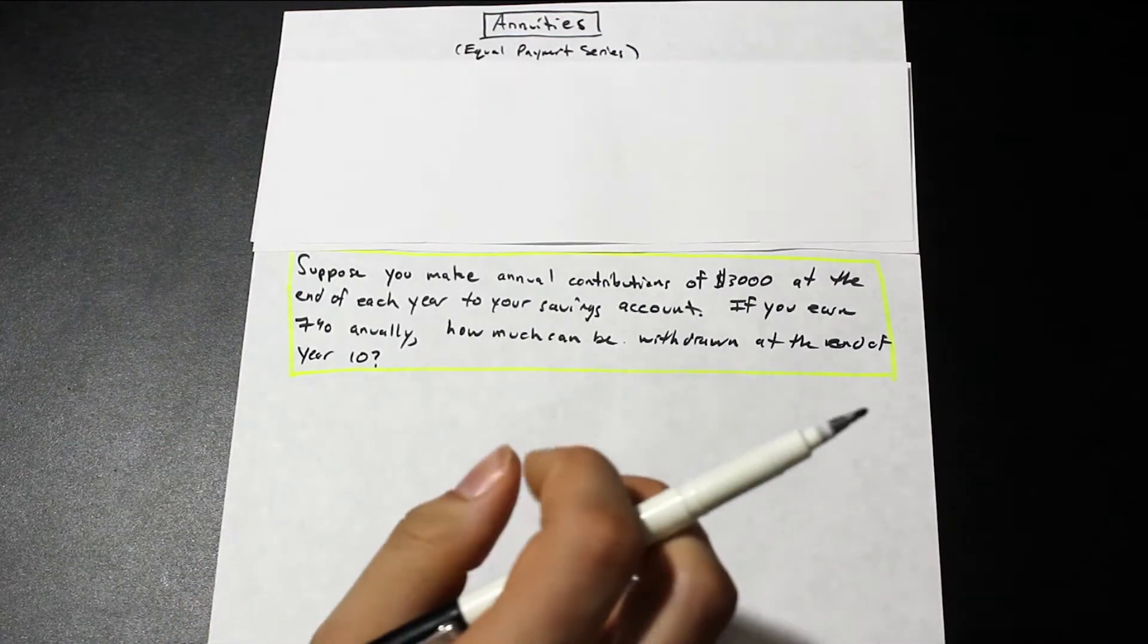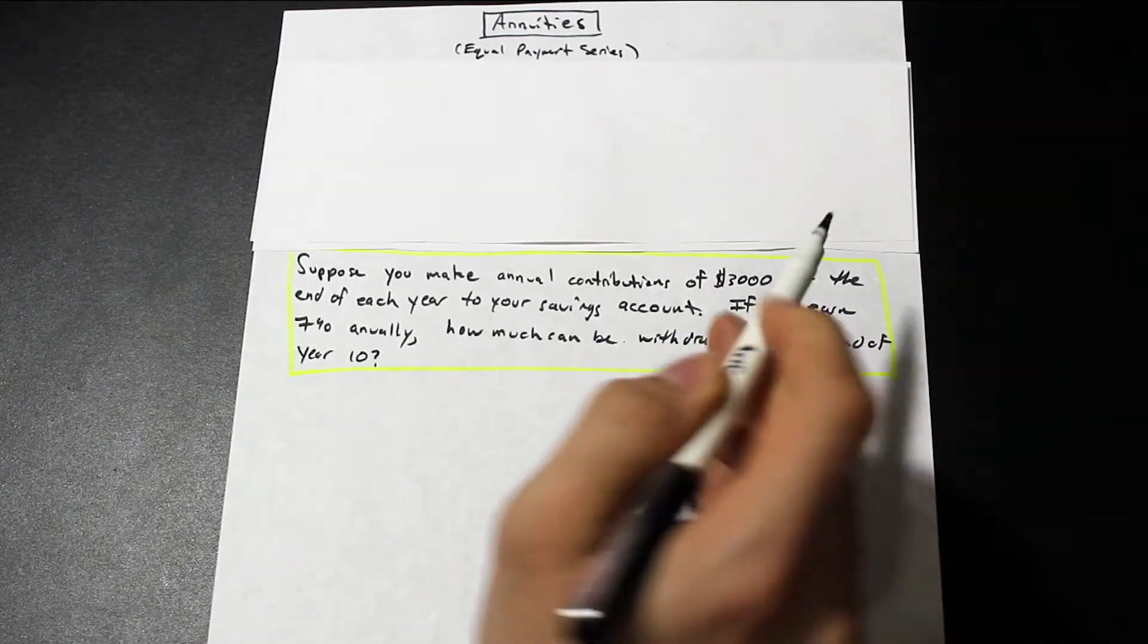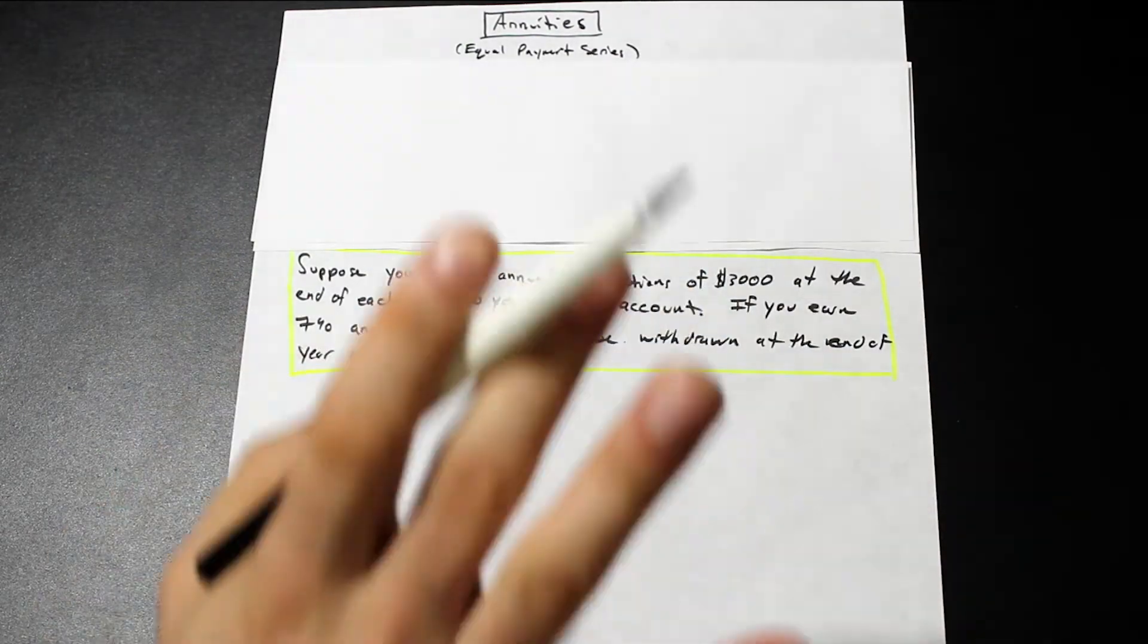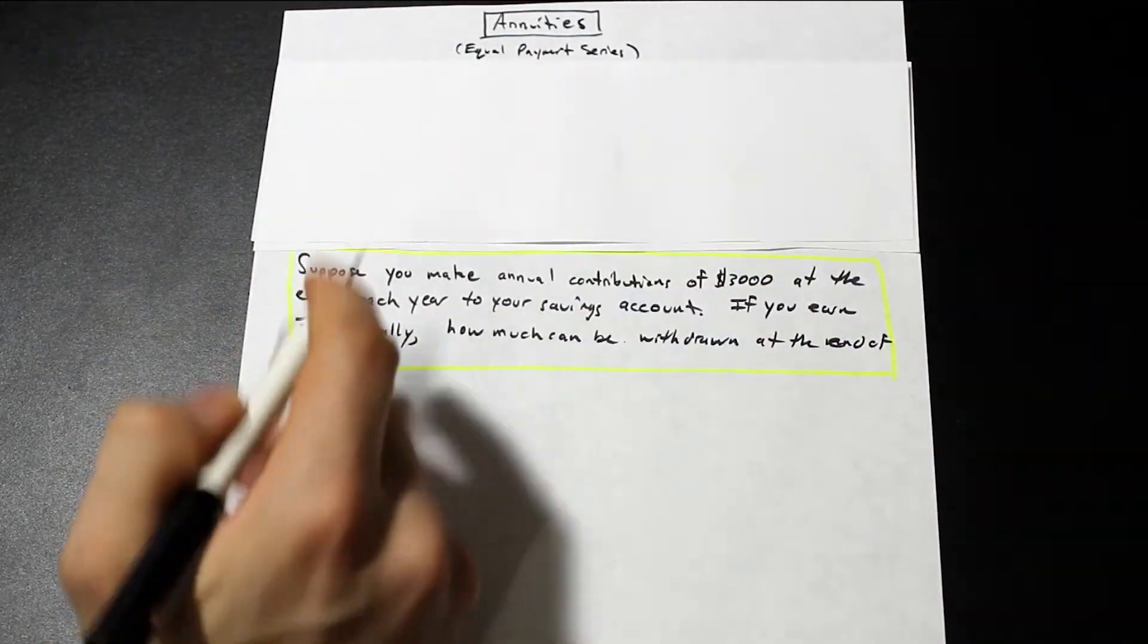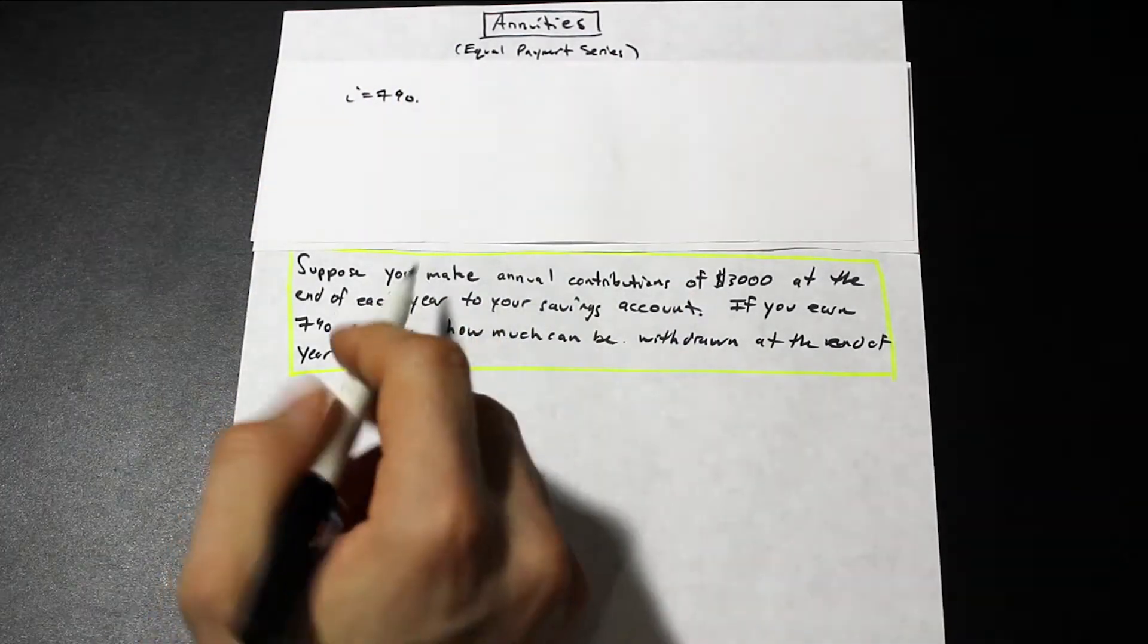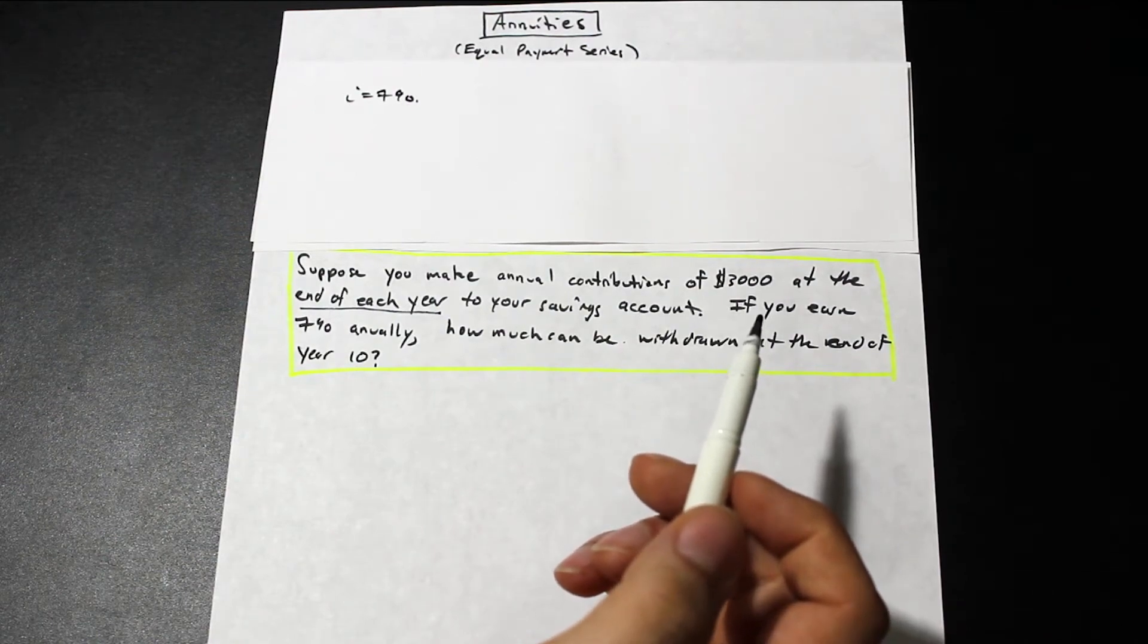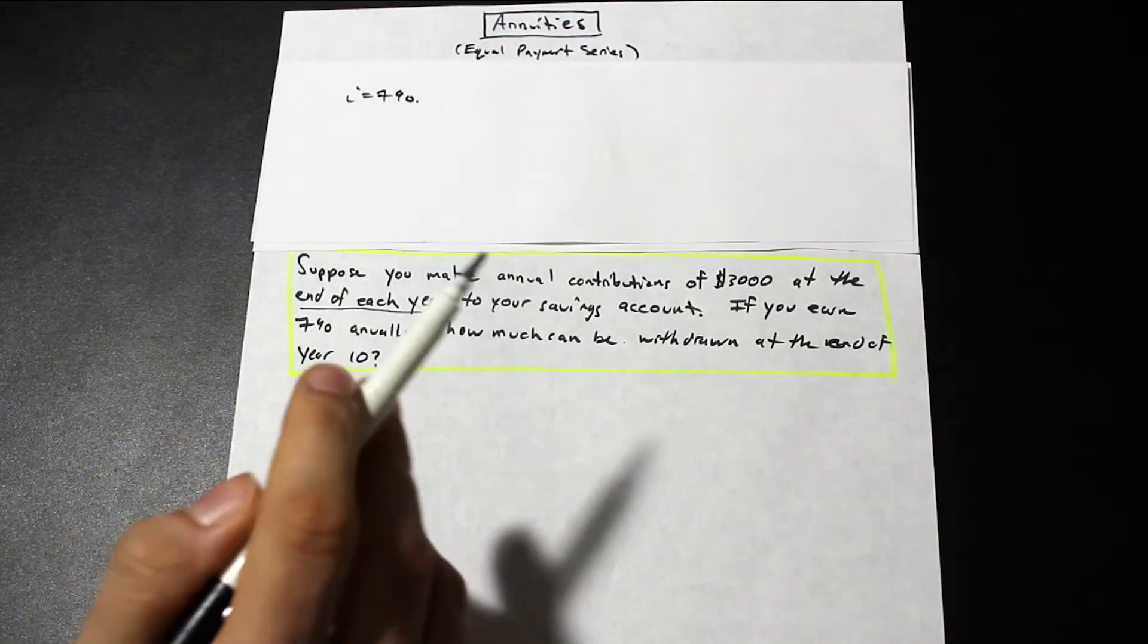Okay, cool. So right off the bat, we know that we're making $3,000 annual payments, so all the payments in 10 years are the same. So we know now that we have an annuity or an equal payment series, so that's like the first hint. We're given I equals 7%, and we're given the end of each year are the payments. So that's also important because the cash flow diagram will look a little bit different. It'll move one year back if they're at the start of the year.